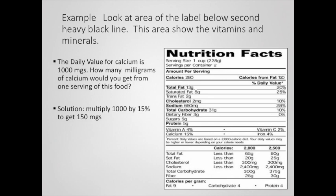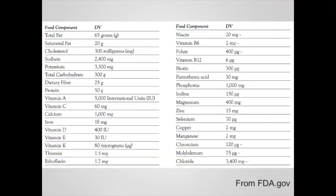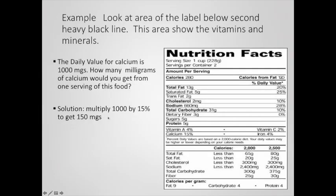Here's another example. The daily value for calcium is 1000 milligrams. To find how many milligrams of calcium you'd get from one serving: go to the nutrition facts label, find calcium listed as 15% of daily value, then multiply 1000 by 0.15 to get 150 milligrams of calcium.